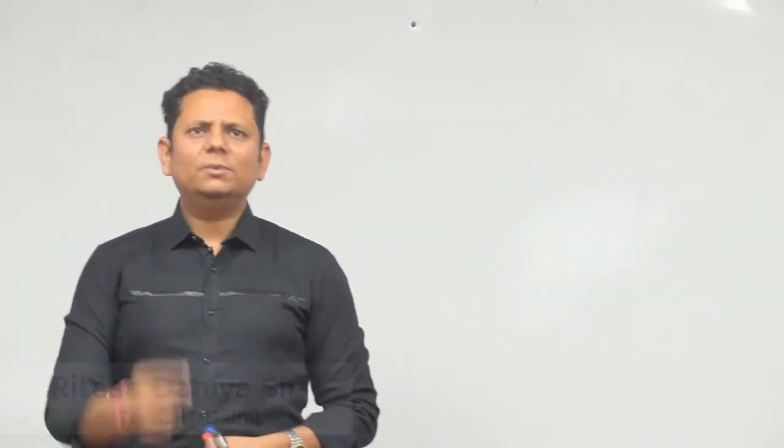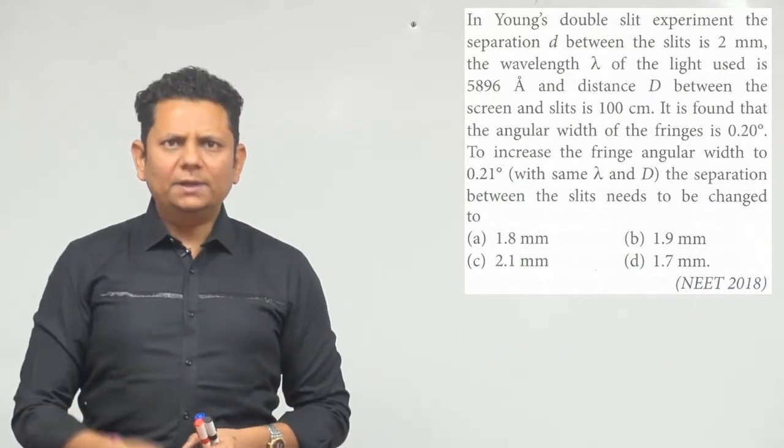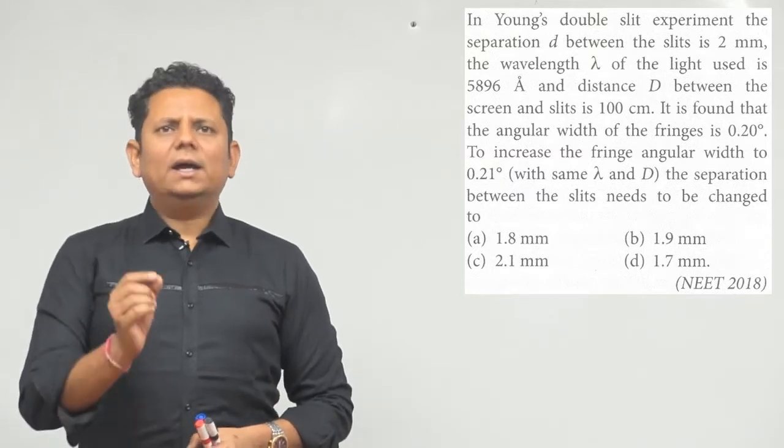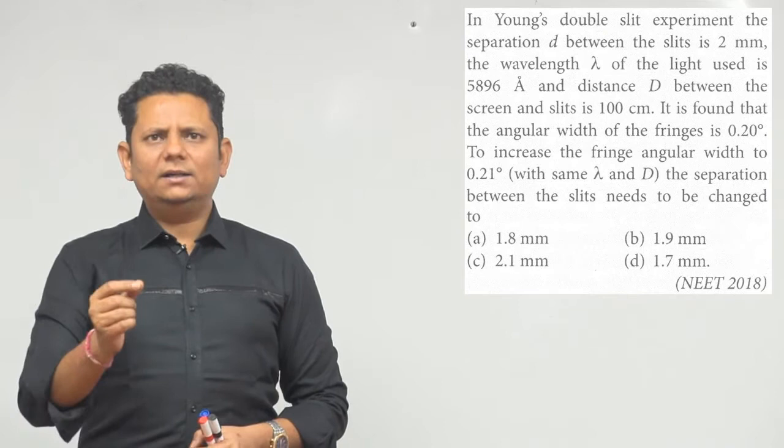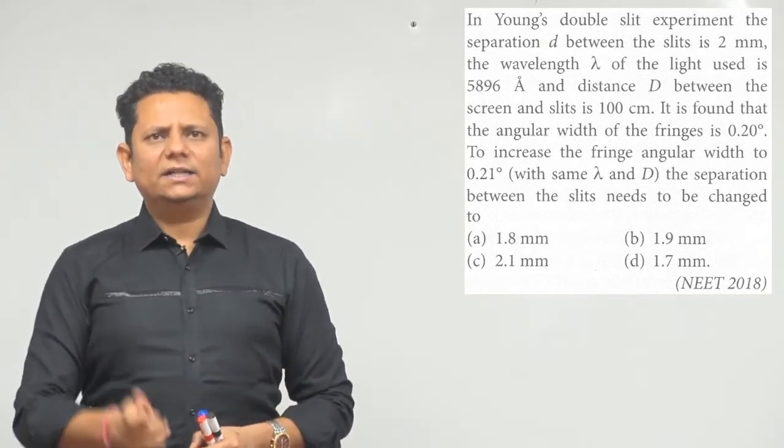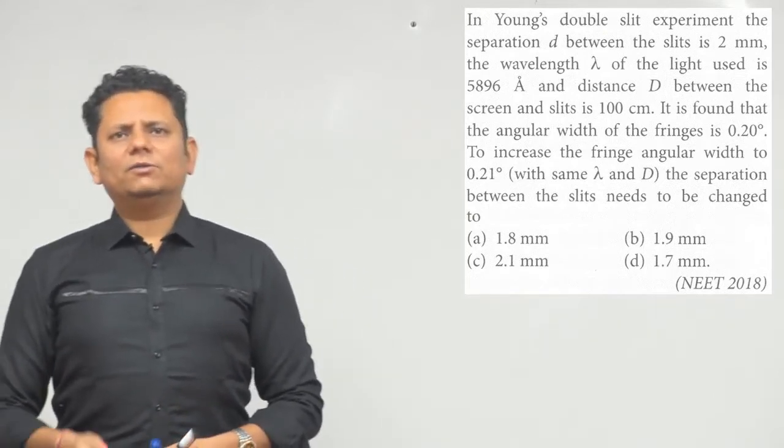Next question - the question says in YDSE setup, the separation d between the slits is 2 millimeter, wavelength used is 5896 angstrom, and distance capital D between the screen and the slits is 100 centimeter. It is found that the angular width of the fringe